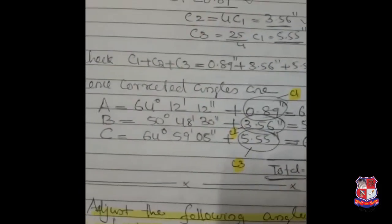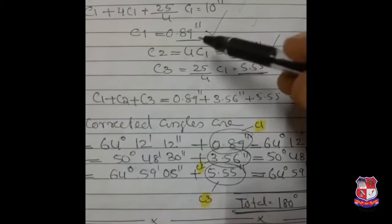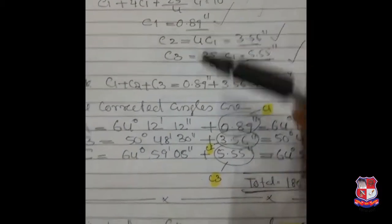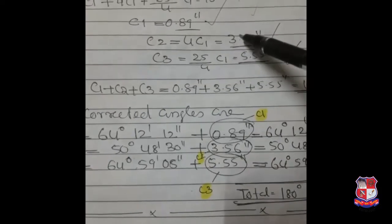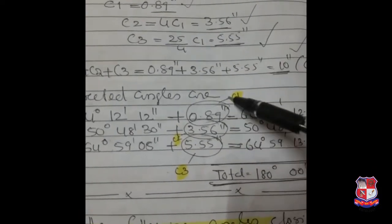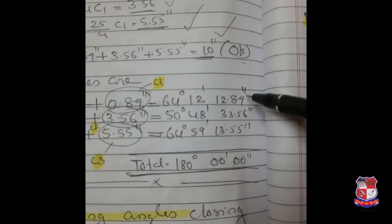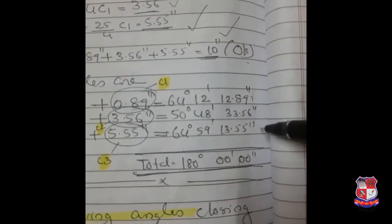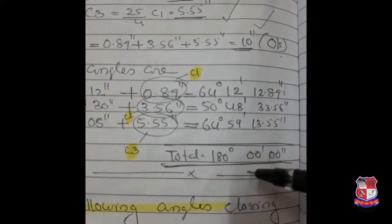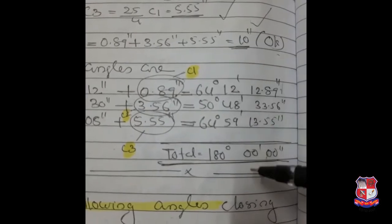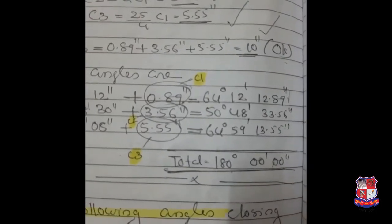The corrected angles are the originally given angles plus C1, plus C2, plus C3 respectively. We got all the final values of A, B, and C. As a final check, you can verify whether their addition exactly equals 180 degrees.